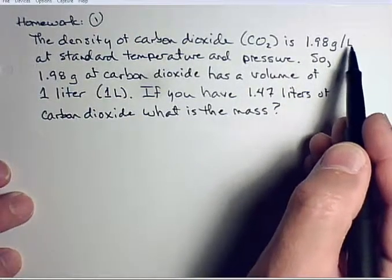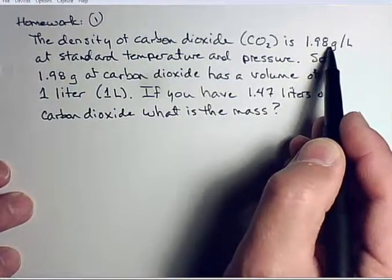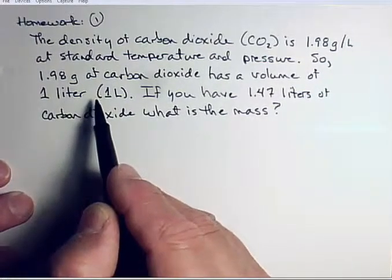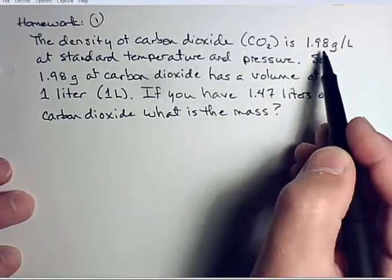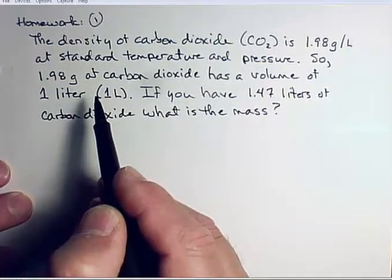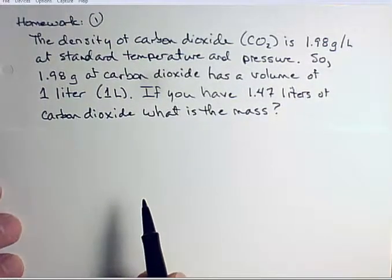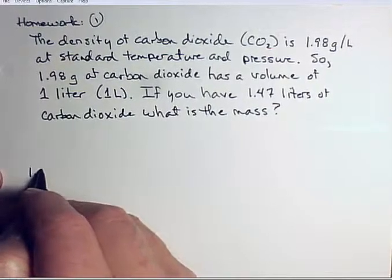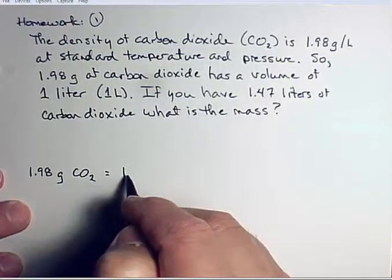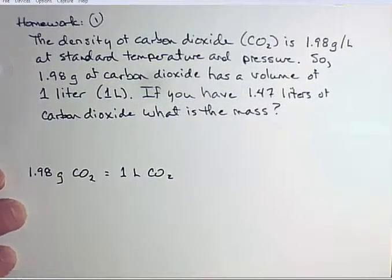So when you see this, you need to know that it means 1.98 grams of carbon dioxide is equal to a volume of one liter. That makes sense? When you see this, this is what you need to think. This part, this second sentence here, tells you what your equality statement is, and your equality statement then is 1.98 grams of carbon dioxide equals one liter of carbon dioxide. So there's your equality statement.